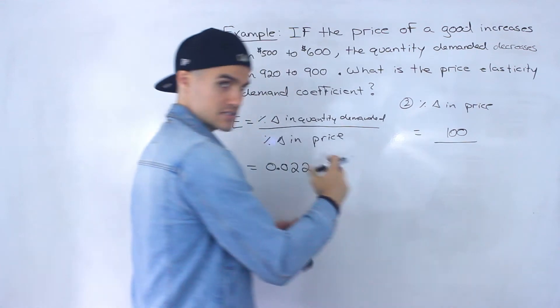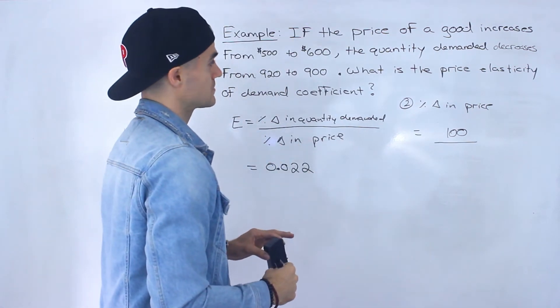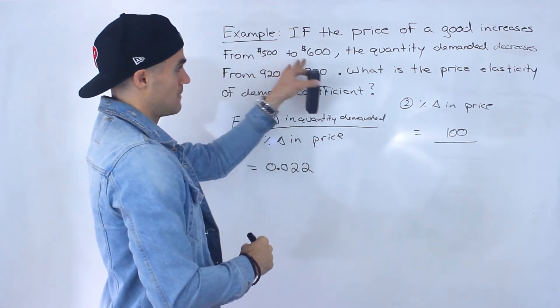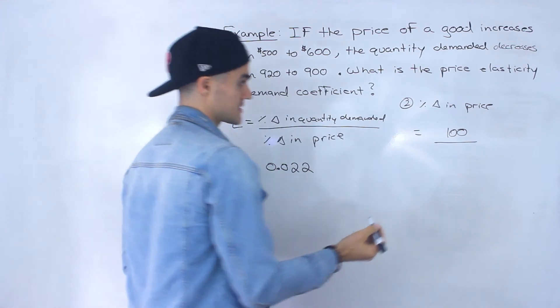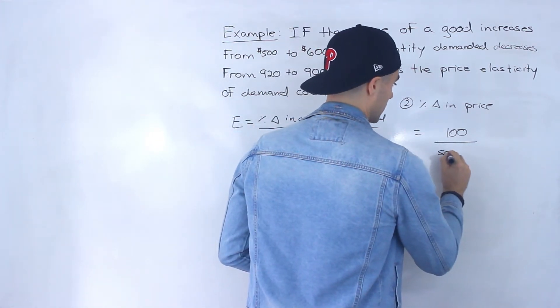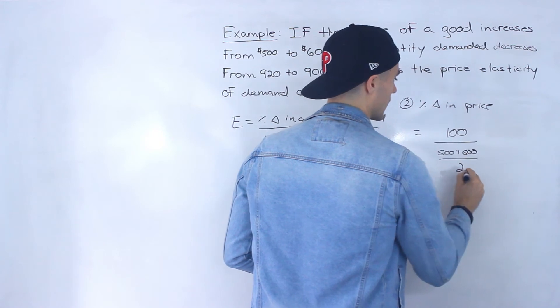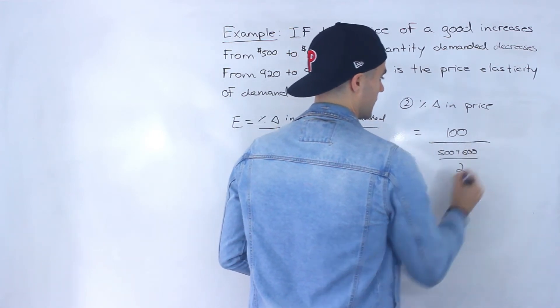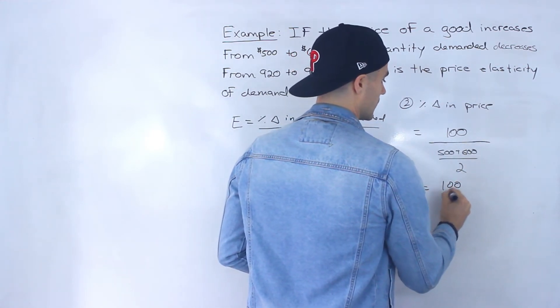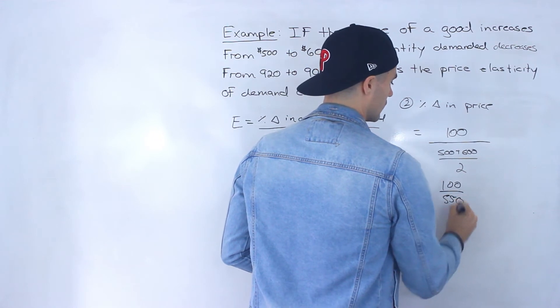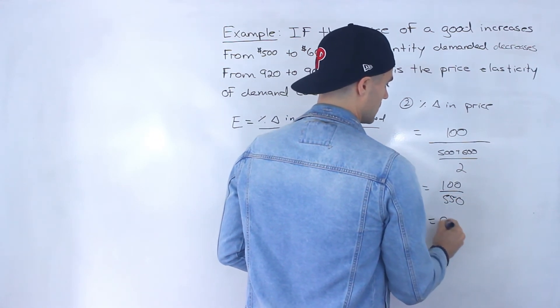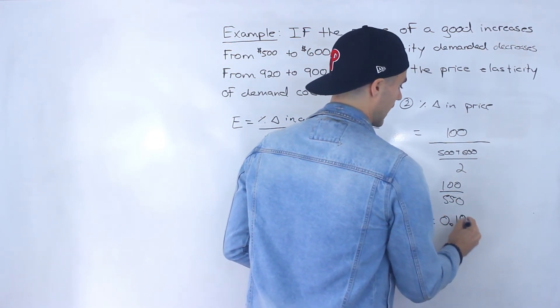And it's already positive. We don't have to put the absolute values. And then the midpoint between $500 and $600 is $550. But the formula is you add them, divide it by 2.